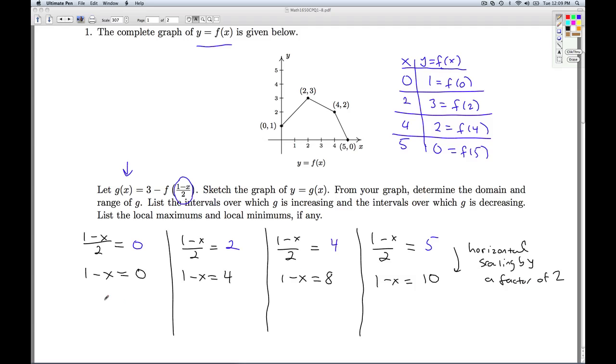The next step to solve this equation would be to subtract 1 from each side. So I get 0 minus 1 is negative 1. 4 minus 1 is 3. 8 minus 1 is 7. 10 minus 1 is 9. So I took each of these x-coordinates and subtracted 1. That means I'm going to shift left 1 unit because I'm subtracting 1 from the x's.